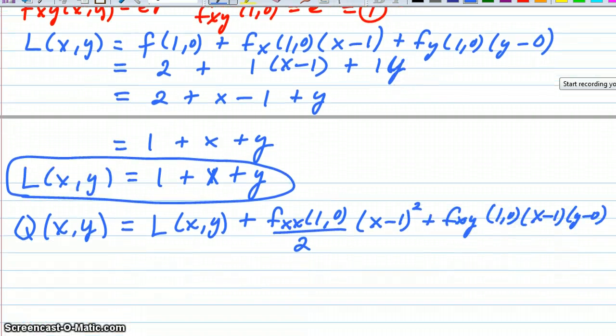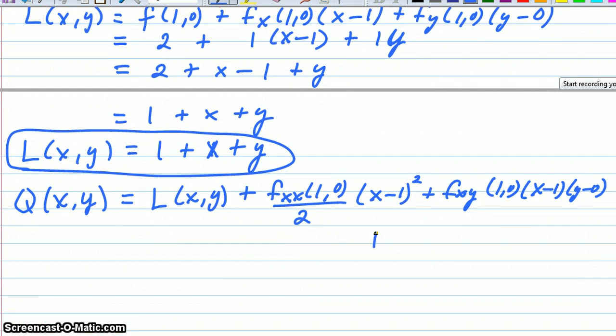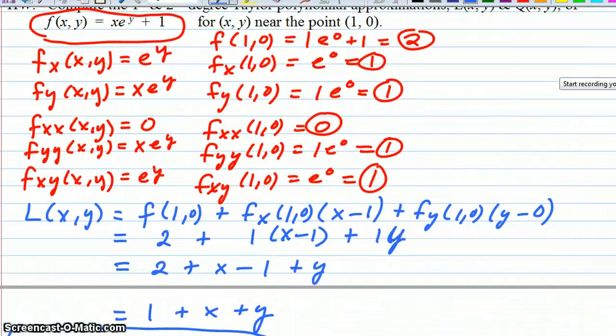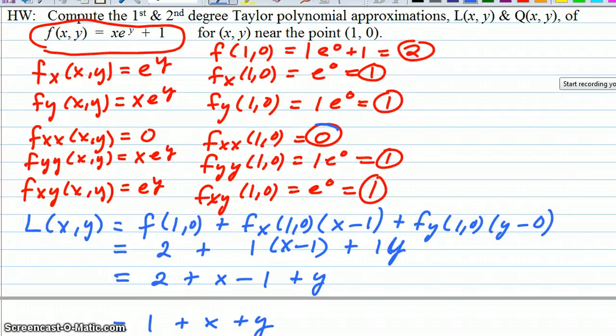And then plus f sub yy at (1,0) over 2 times (y minus 0) squared. Now we get to put in the values we know. So we've got L(x,y), which was 1 plus x plus y, we'll replace that function with the expression that it represents. Plus f sub xx. Let's go up and see what that was. F sub xx at (1,0) was 0. F sub xy at (1,0) was 1. And f sub yy at (1,0) was 1.